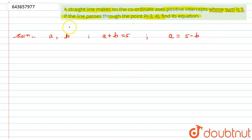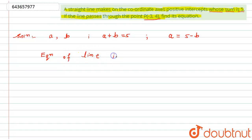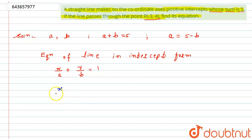Now, reading further: the line passes through point P(-3, 4). As we know, the equation of a line in intercept form is x/a + y/b = 1. If I substitute the value of a as (5 - b), this becomes x/(5 - b) + y/b = 1.